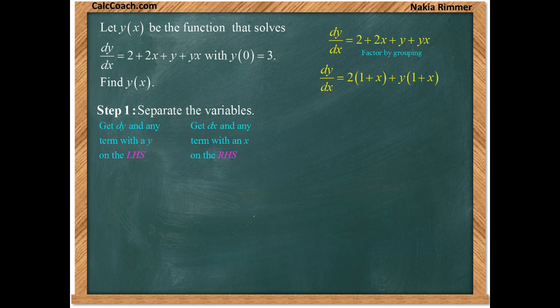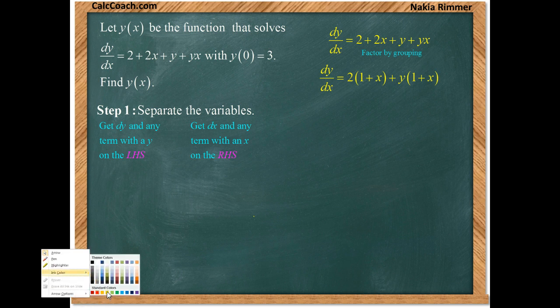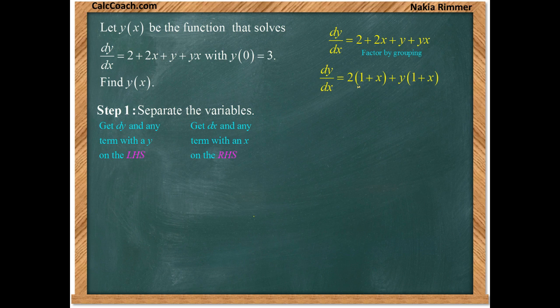So then we take these two as two terms themselves, and we factor out a 1 + x from there. Here's a 1 + x, here's a 1 + x. These are two terms. When I factor out the 1 + x, I'm left with (1 + x)(2 + y).